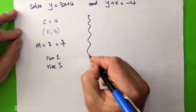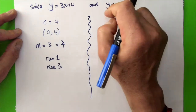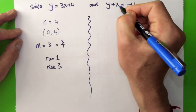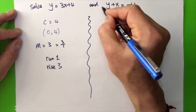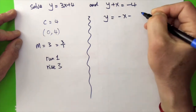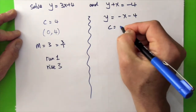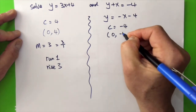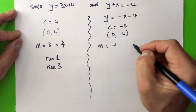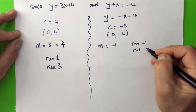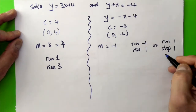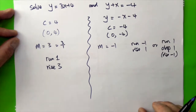However, for the second equation, we need to rearrange it into the form y equals mx plus c. To eliminate x from the left-hand side, we add minus x. Therefore, we add minus x on the right-hand side as well, giving y equals minus x minus 4. This time, c is minus 4, so the intercept is (0, minus 4). Now m is minus 1, meaning a run of minus 1 and rise of 1, or equivalently a run of 1 and drop of 1.